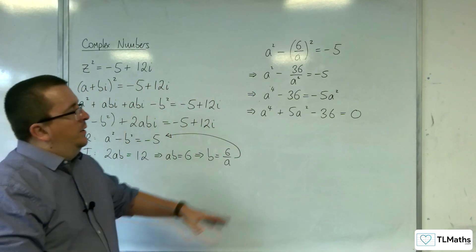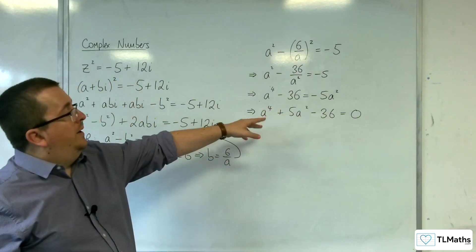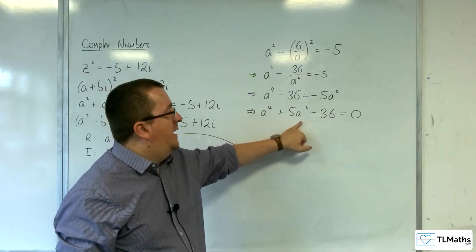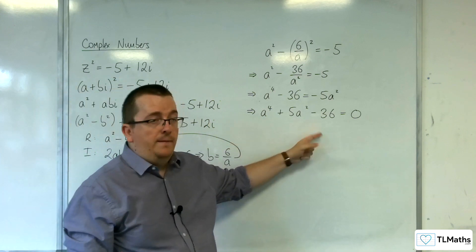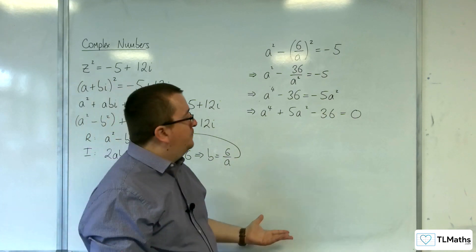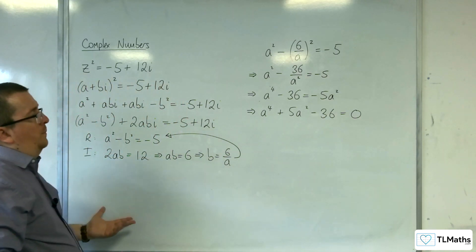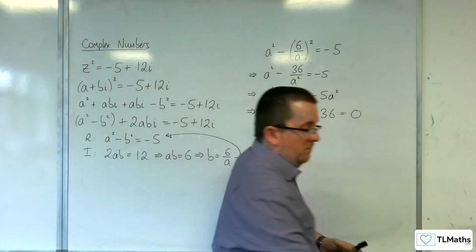So what you have here is a quartic equation to solve. But because you've got a⁴ and the a² there, you don't have a cubed, you don't have the linear term of a. That means we've got a quadratic in disguise.